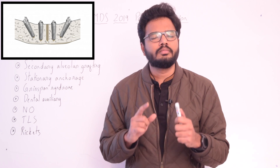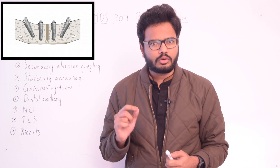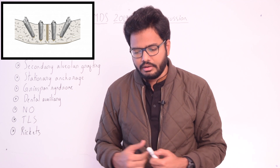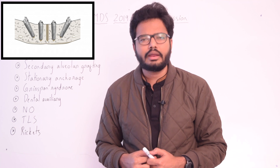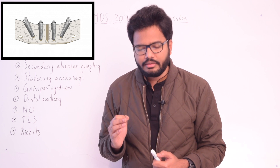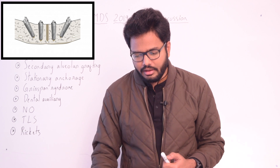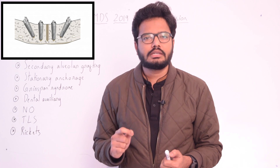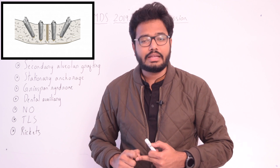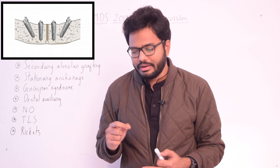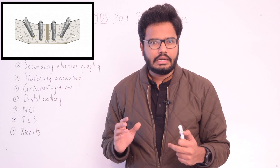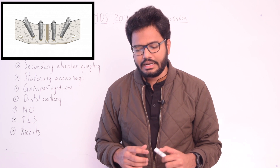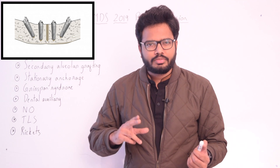Orthodontic implants have become a reliable method for providing temporary additional anchorage. The implants may be placed under an angulation between 10 to 20 degrees and up to 45 degrees in the maxilla. Particularly, a 30 to 40 degree angulation to the long axis of adjacent teeth and a 10 to 20 degree angulation in the mandible are recommended to avoid dental injuries. This angle also increases the area of bone contact and ensures greater primary stability.